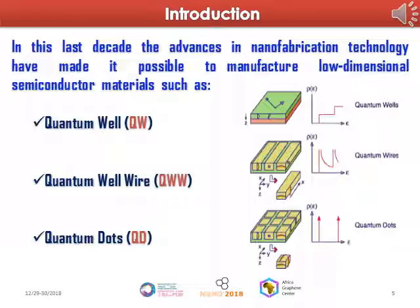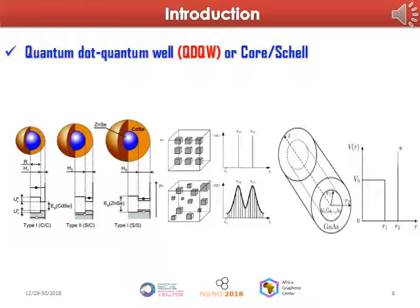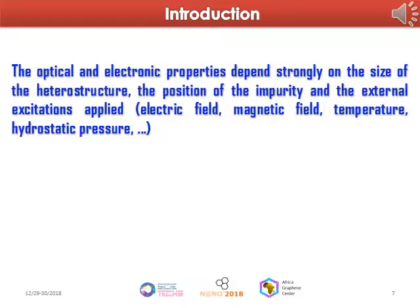Quantum dots are found in several geometric shapes: cubic, spherical, and cylindrical. A new structure called the InGaAs quantum dot or core-shell has been developed in several geometric shapes. In this nanostructure, the optical and electronic properties depend strongly on the size of the heterostructure, the position of the impurity, and the external excitations applied such as electric field, magnetic field, temperature, and hydrostatic pressure.